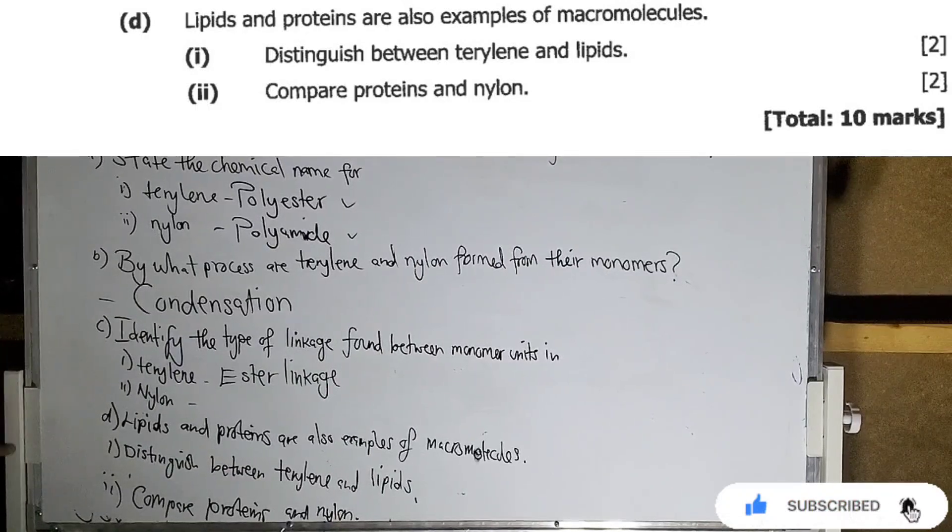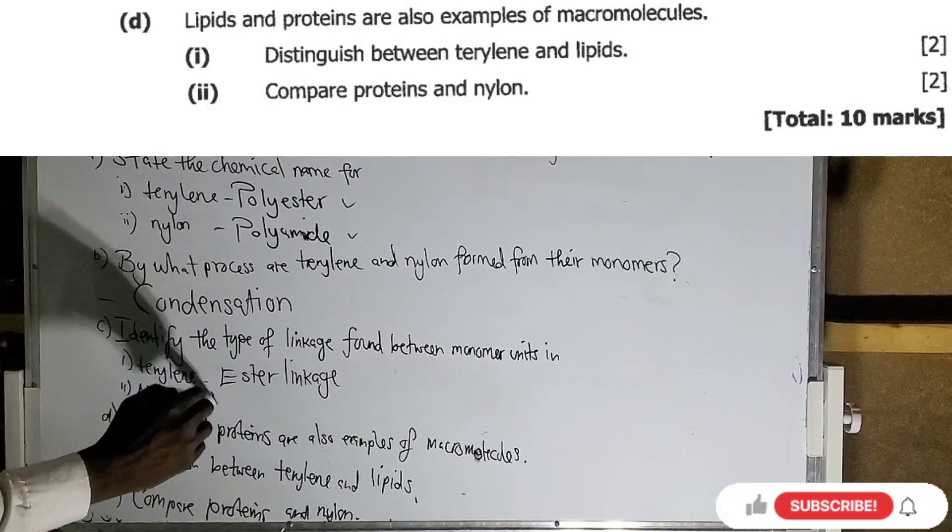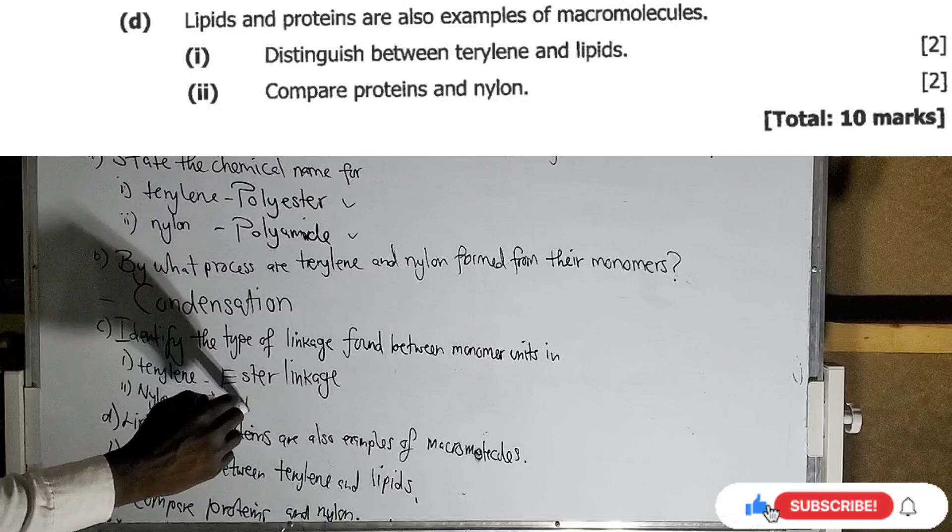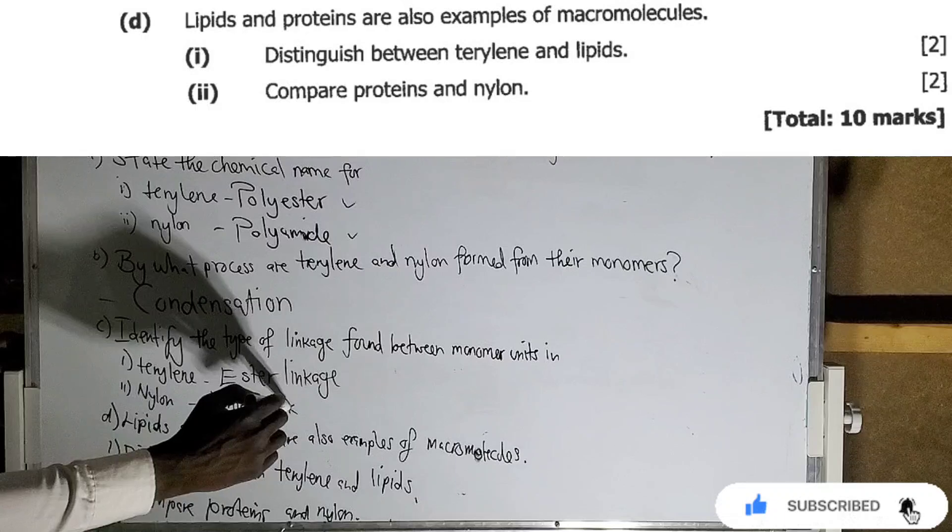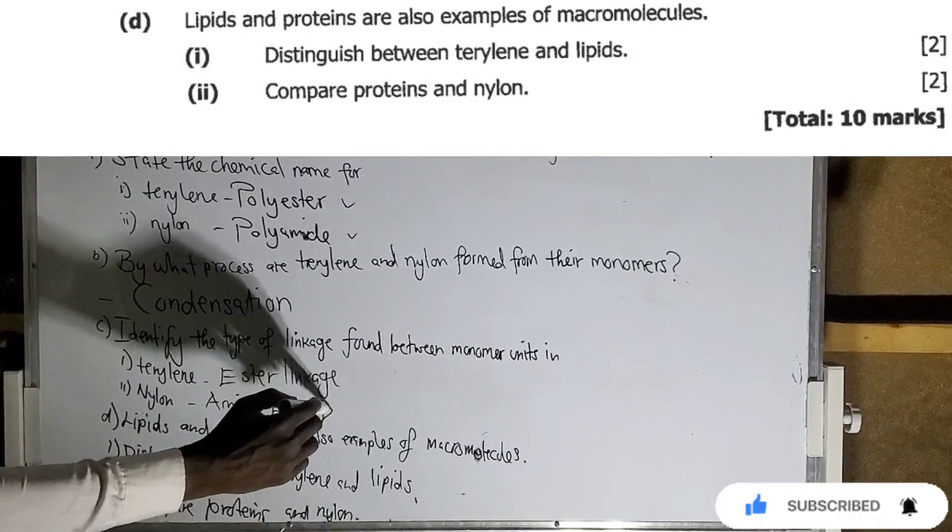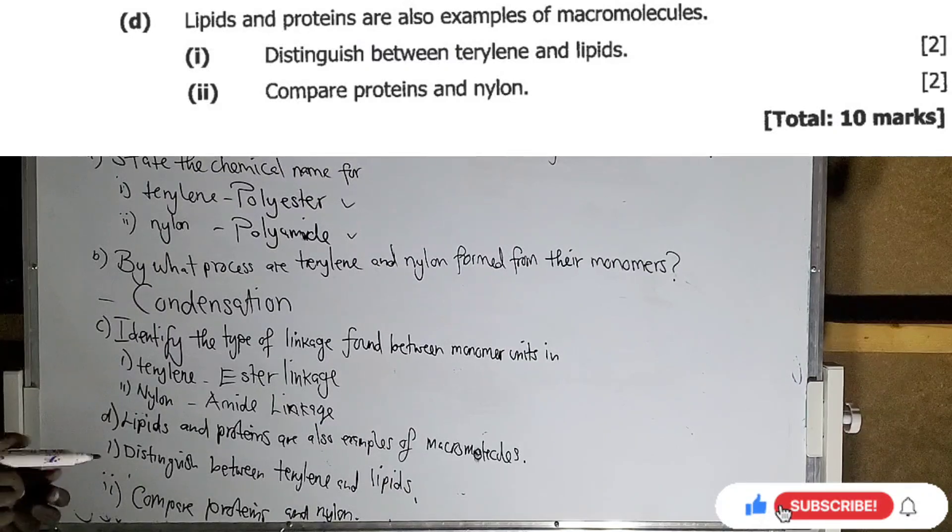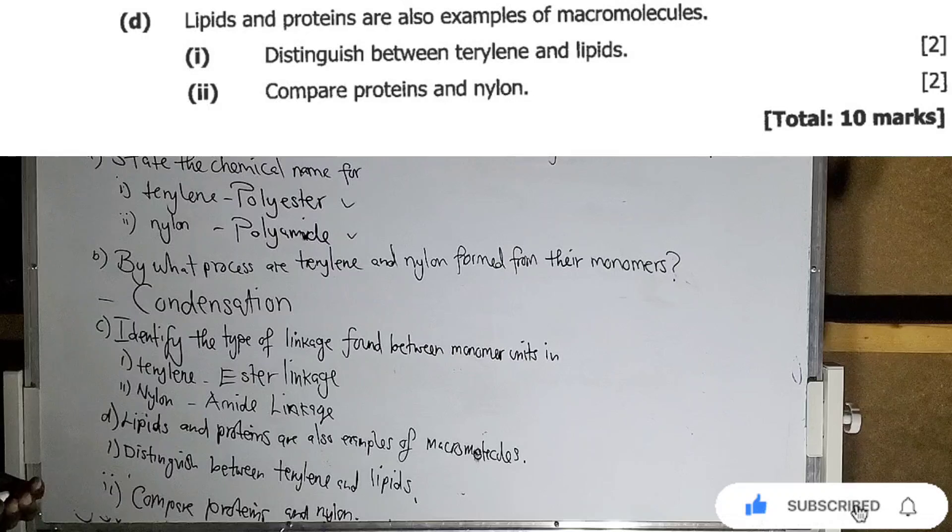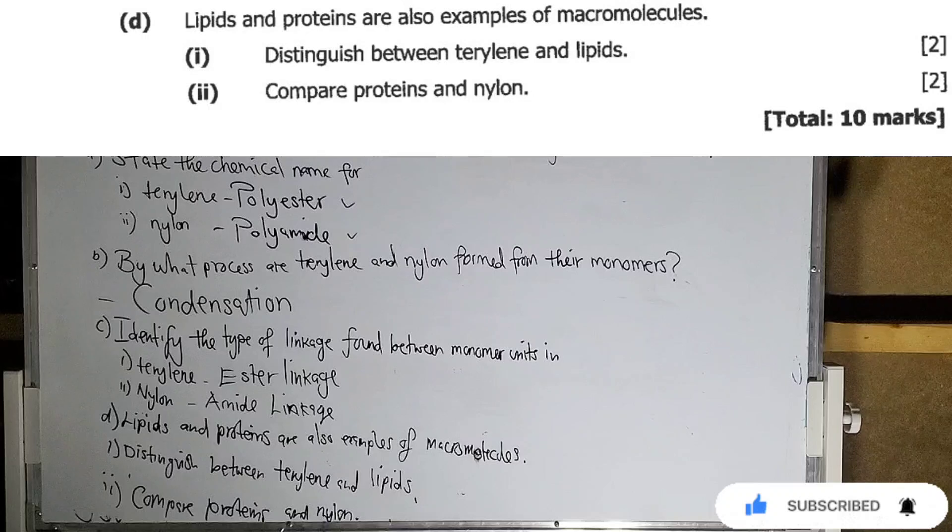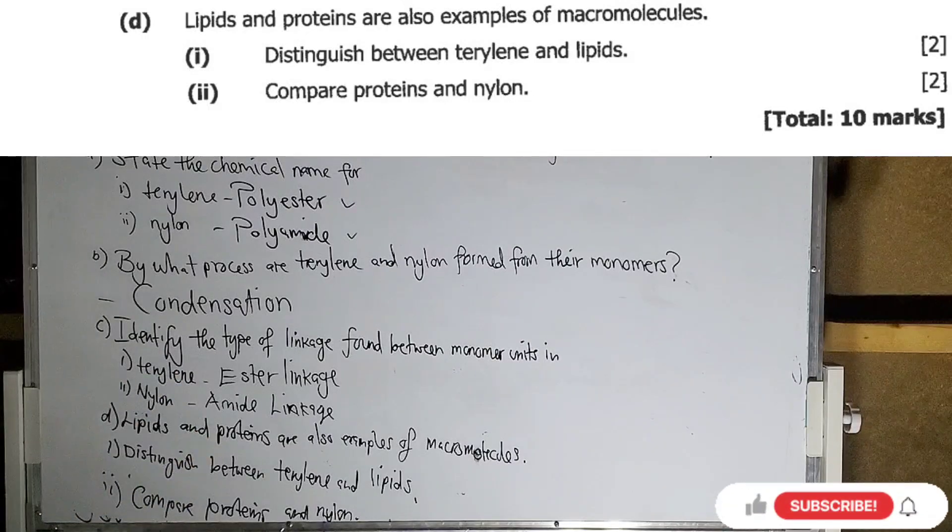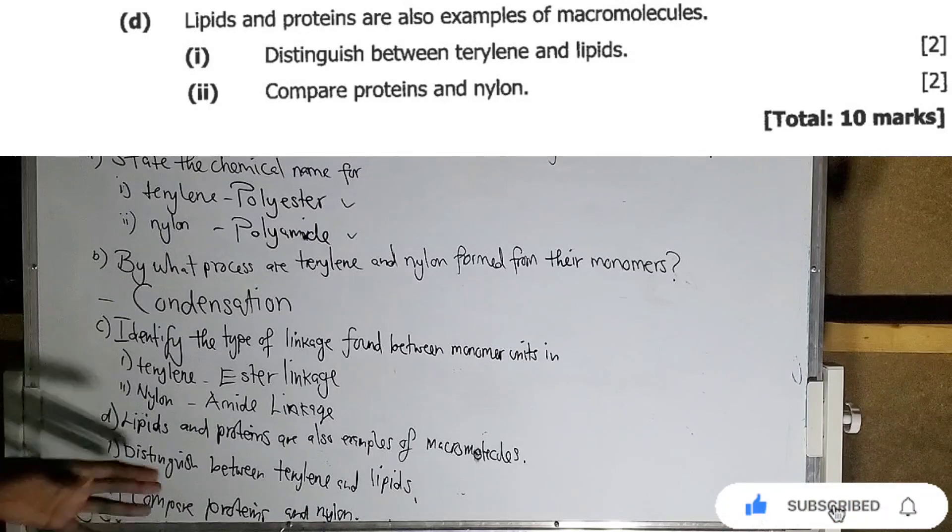Now, Nylon is a polyamide. So the linkage is an amide linkage. Now, we have the last question here, which is question D. And it's saying lipids and proteins are also examples of macromolecules.